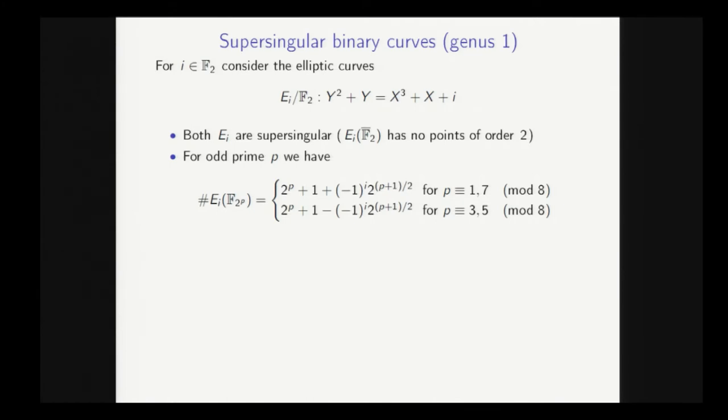And here's a couple of examples here over F2, so E0 and E1. And it's a basic property of supersingular curves, or these two in particular, that for any odd prime p, if we consider the curve over F2 to the p, then the group orders are just given by these expressions here.